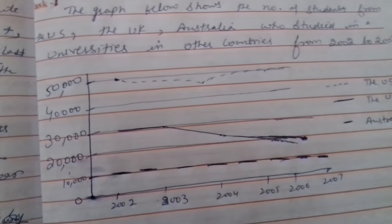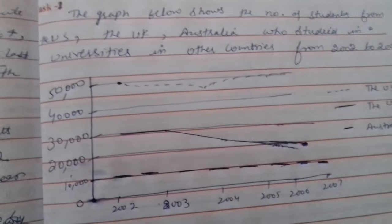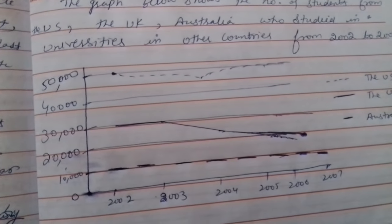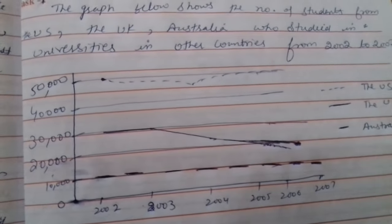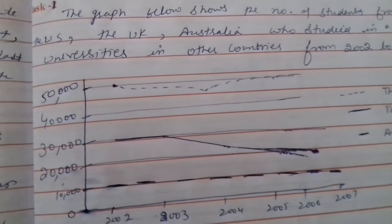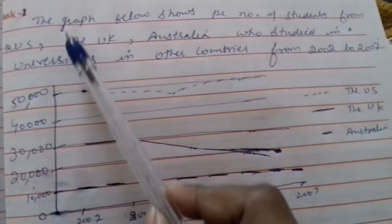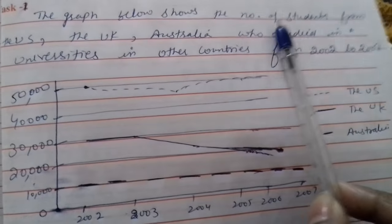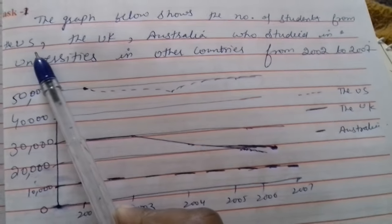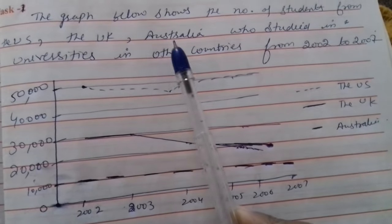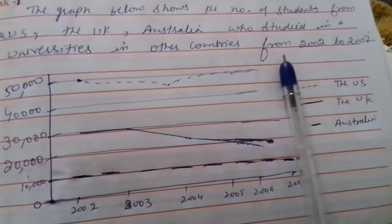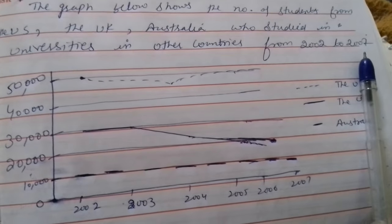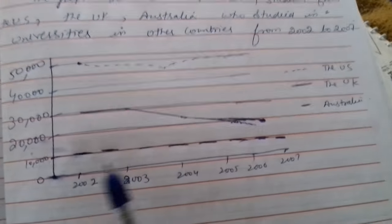You will discuss the main point so you will complete Task 1 and after that you will save your valuable time for Task 2. This is the statement. The graph below shows the number of students from the US, the UK, and Australia who studied in universities in other countries from 2002 to 2007. This is the statement and this is the graph.